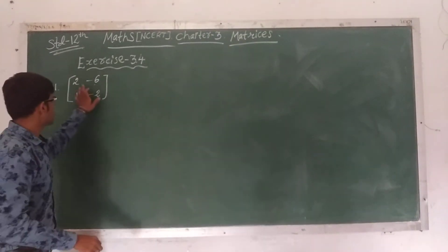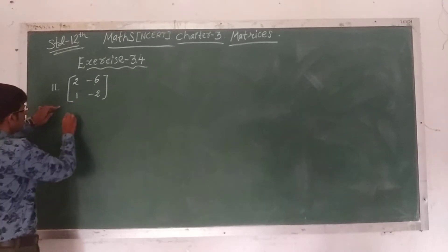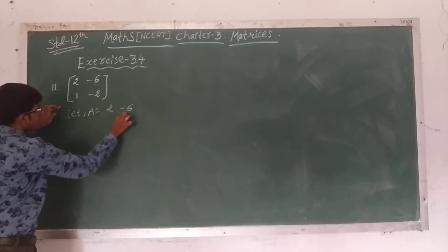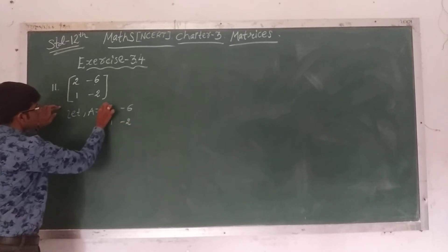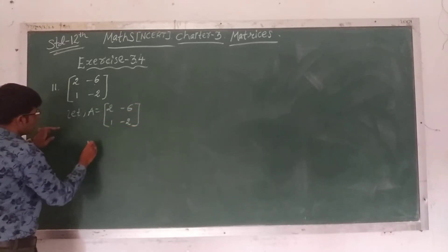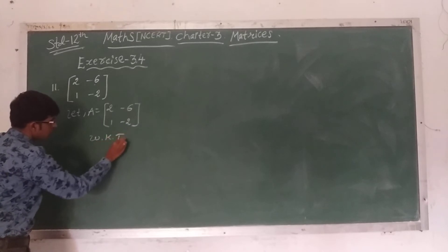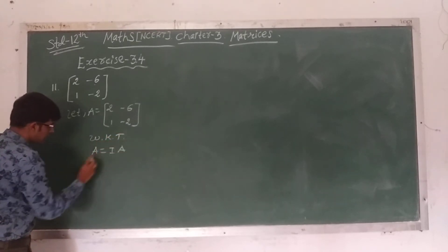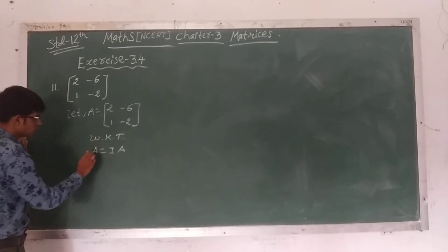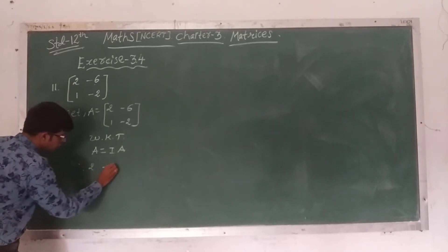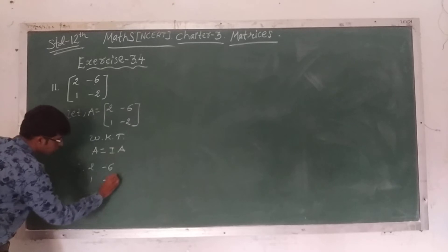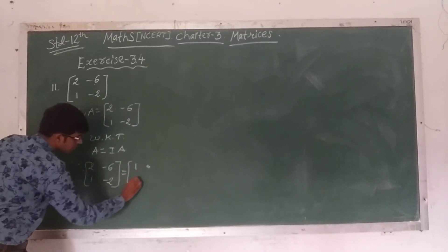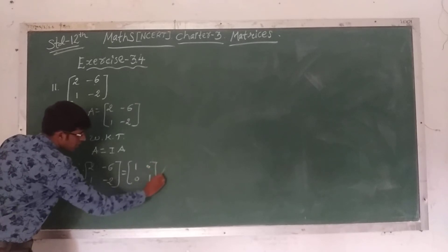Next, question number 11: matrix [2, -6; 1, -2]. Let A equal to [2, -6; 1, -2]. We know that A equals I times A. The value of A is [2, -6; 1, -2] equals [1, 0; 0, 1] times A.